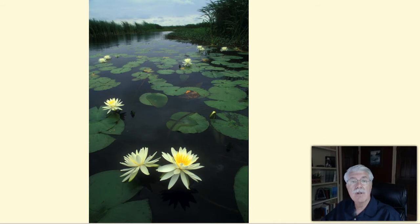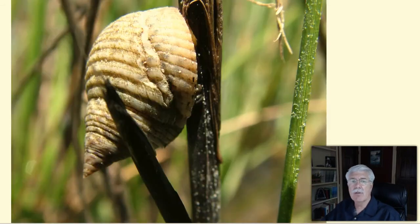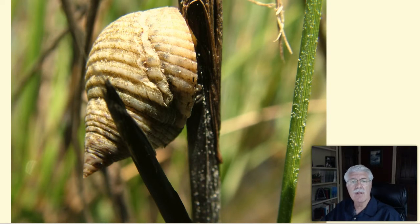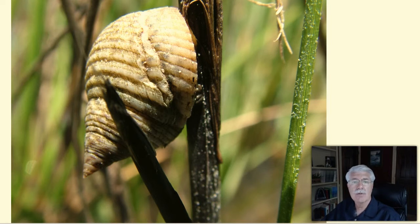Unlike plants, animals can't make their own food. To survive, they must eat other living things. Animals that eat plants are called primary consumers or herbivores. A pond snail is a primary consumer because it eats algae and other aquatic plants.